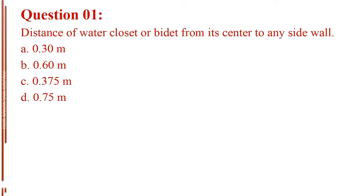Question number 1. Distance of water closet or bidet from its center to any side wall. Letter A, 0.30 meter. Letter B, 0.60 meter. Letter C, 0.375 meter. Letter D, 0.75 meter.